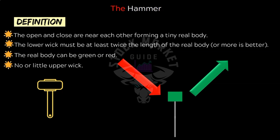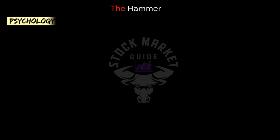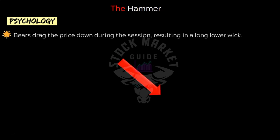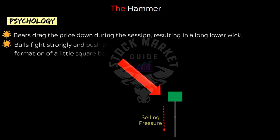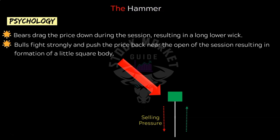There is no or little upper wick as shown in these demo hammer patterns. The hammer is a bullish reversal pattern and thus should ideally be formed in a downtrend. As the market is in continuous downtrend, on the day of hammer formation the bears drag the price down during the session, as indicated by a long lower wick. But soon the smart money pours in and bulls fight strongly, pushing the price back near to the open of the session, resulting in formation of a little square-shaped body. The longer the wick, the greater the likelihood of a reversal.